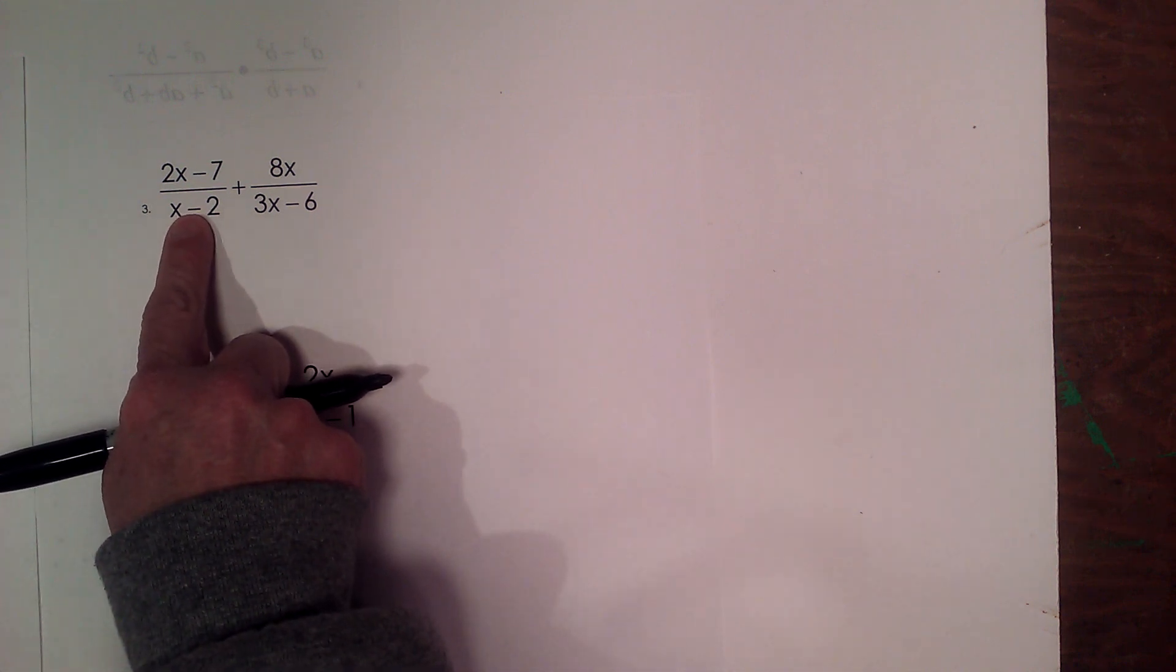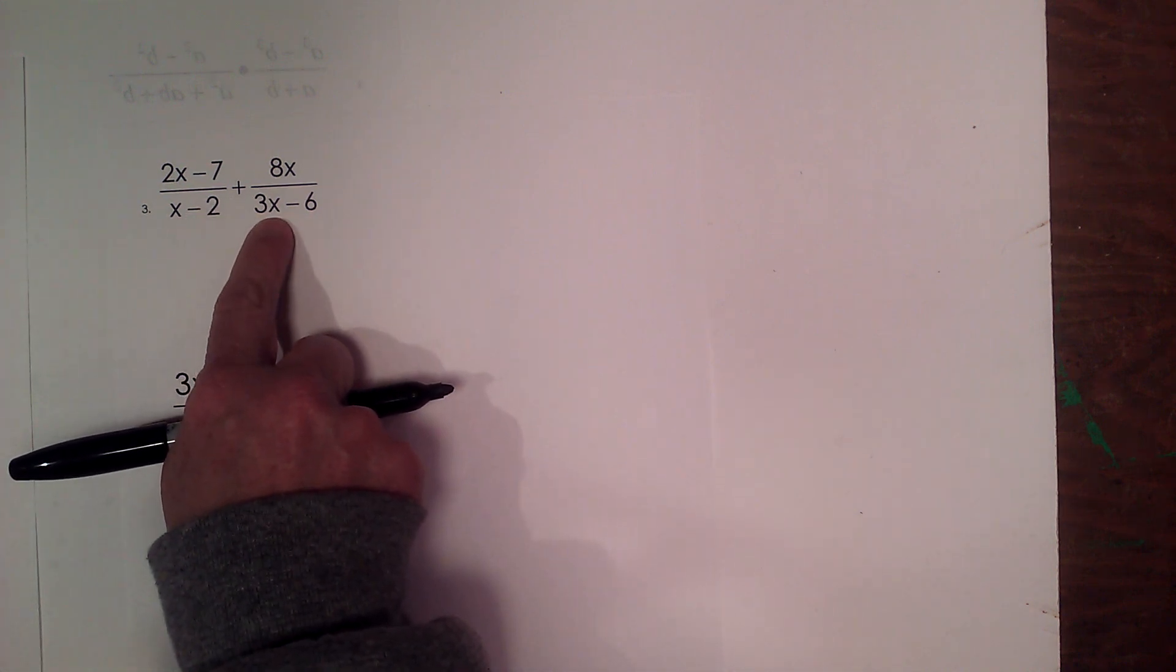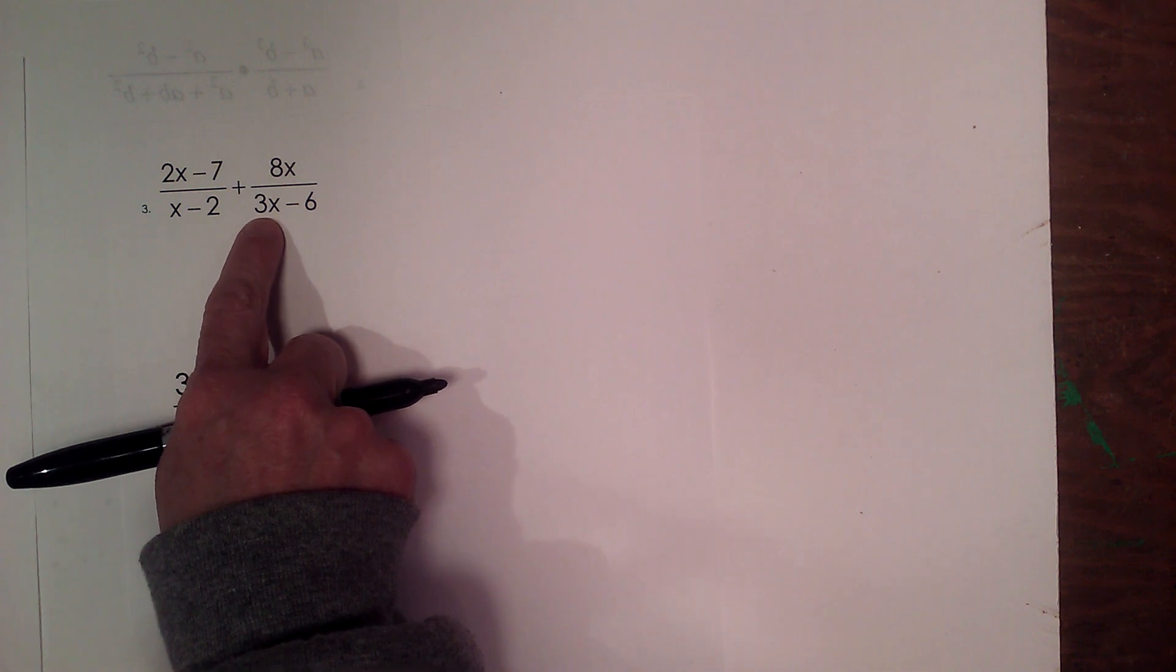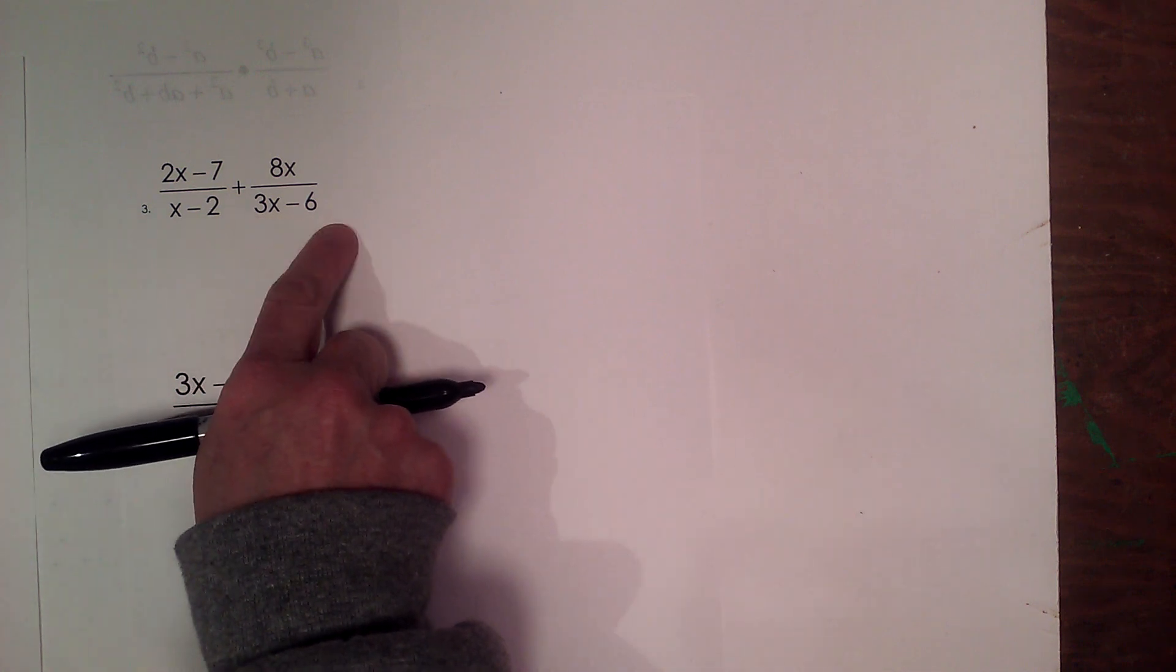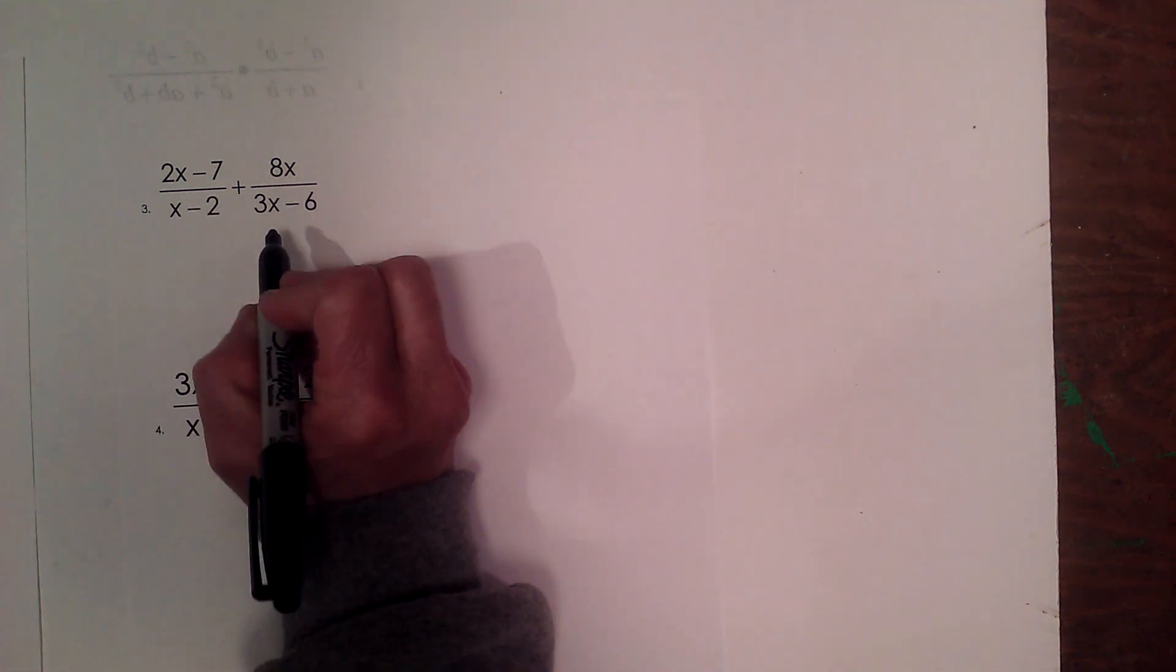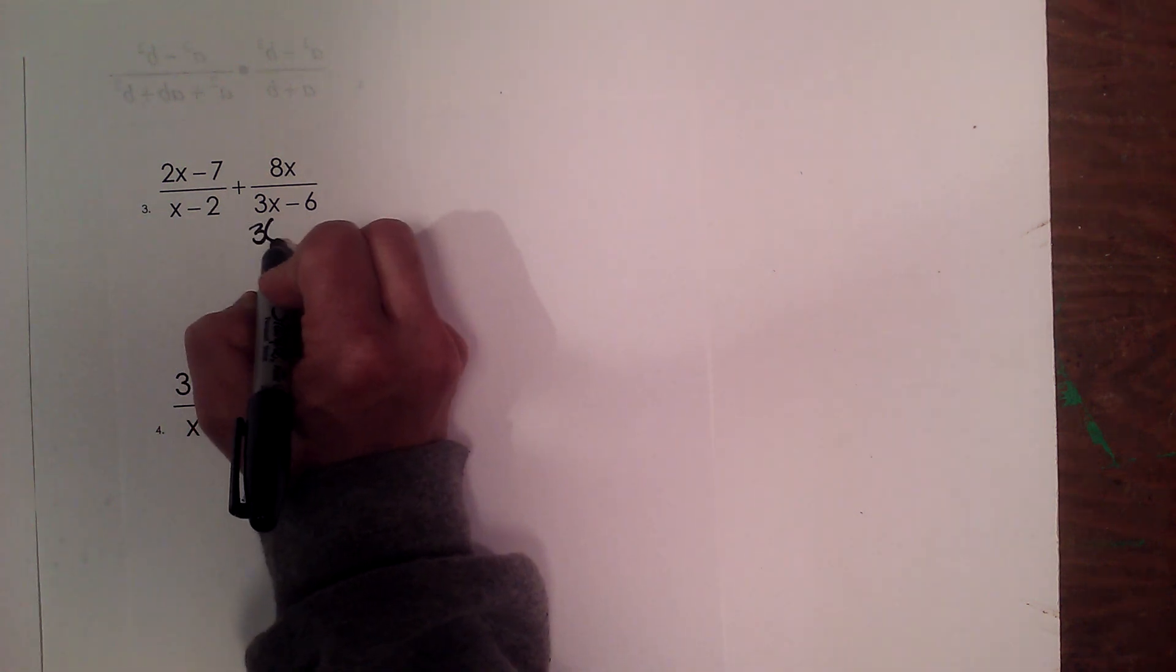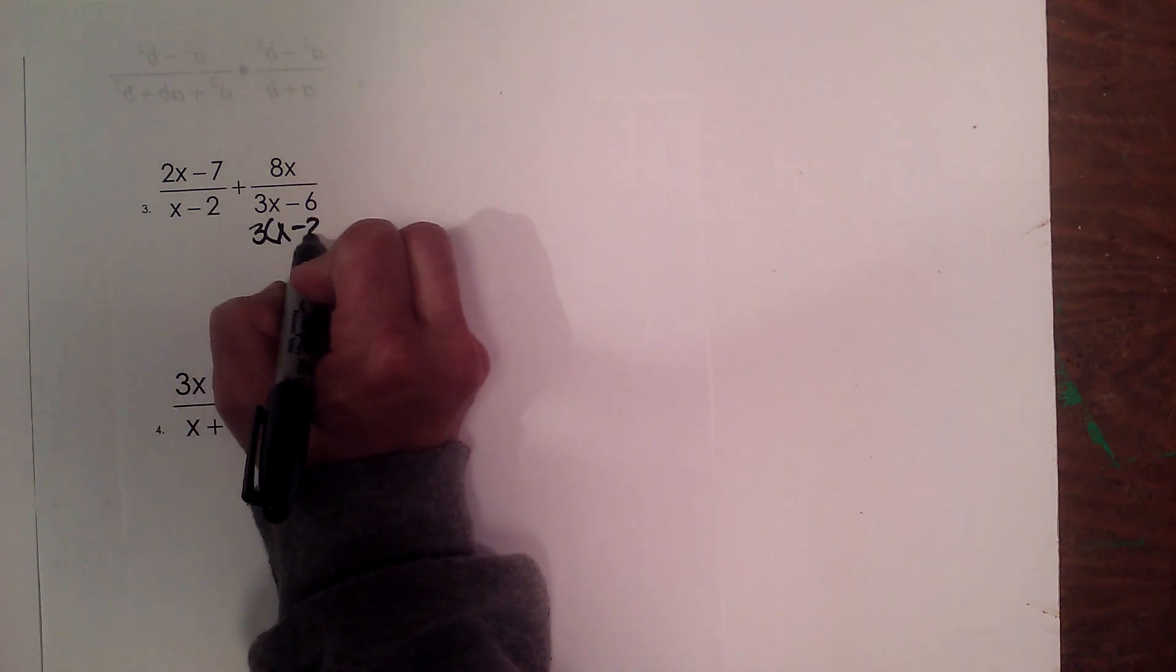Well, x minus 2 will not factor, but we can factor this 3x minus 6. I have a common factor of 3, so I'm going to factor out a 3 and I'm left with x minus 2.